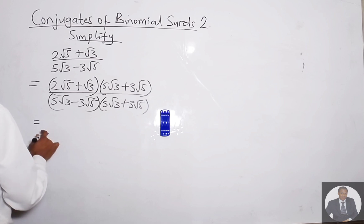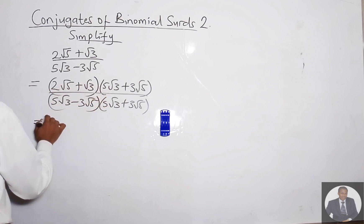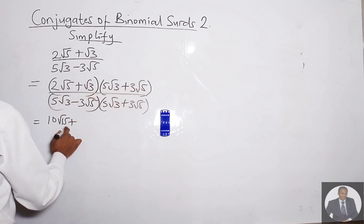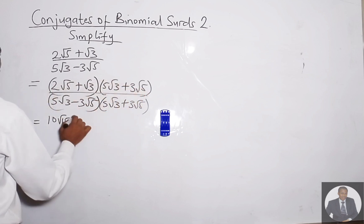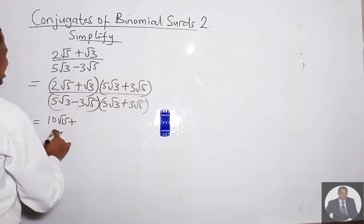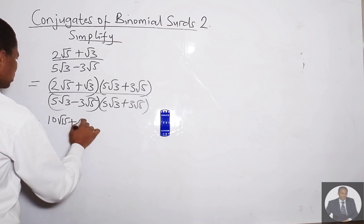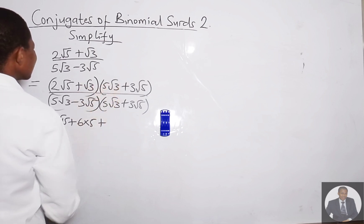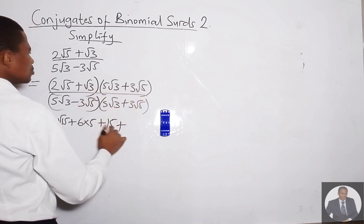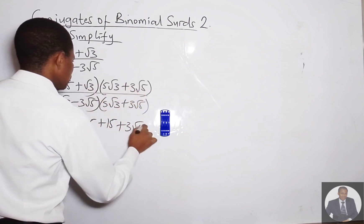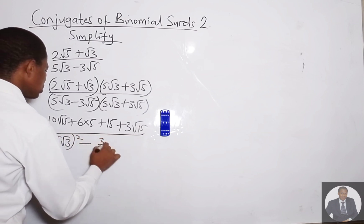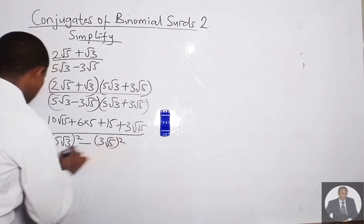Expanding: 2√5 times 5√3 is 10√15. Then 2√5 times 3√5 is 2×3×5, which is 30. Next, √3 times 5√3 is 5×3 = 15. Plus √3 times 3√5 is 3√15. All over (5√3) squared minus (3√5) squared.